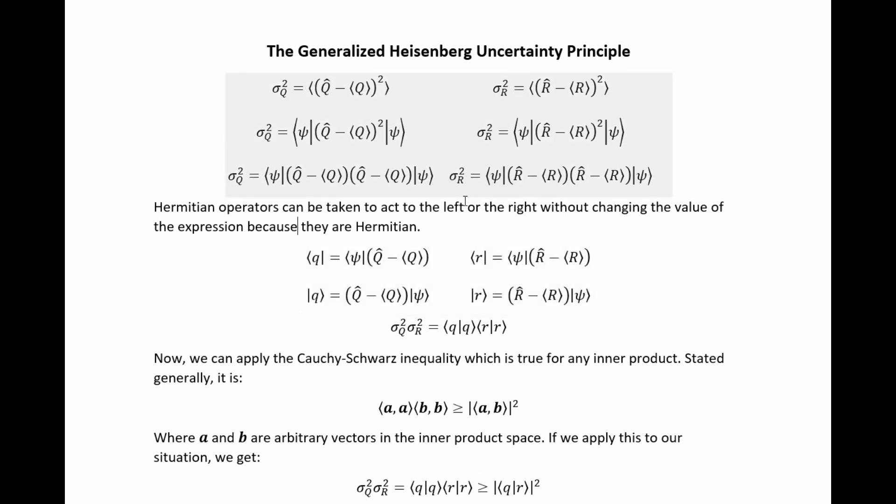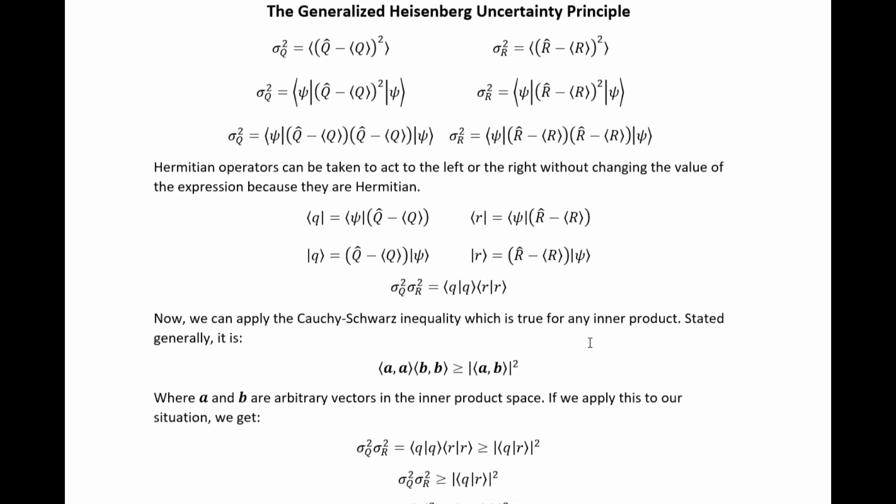And then in terms of that notation, we can rewrite these uncertainty squares as these Q, Q, and R, R inner products. And then the product of the squares just ends up being this, obviously.